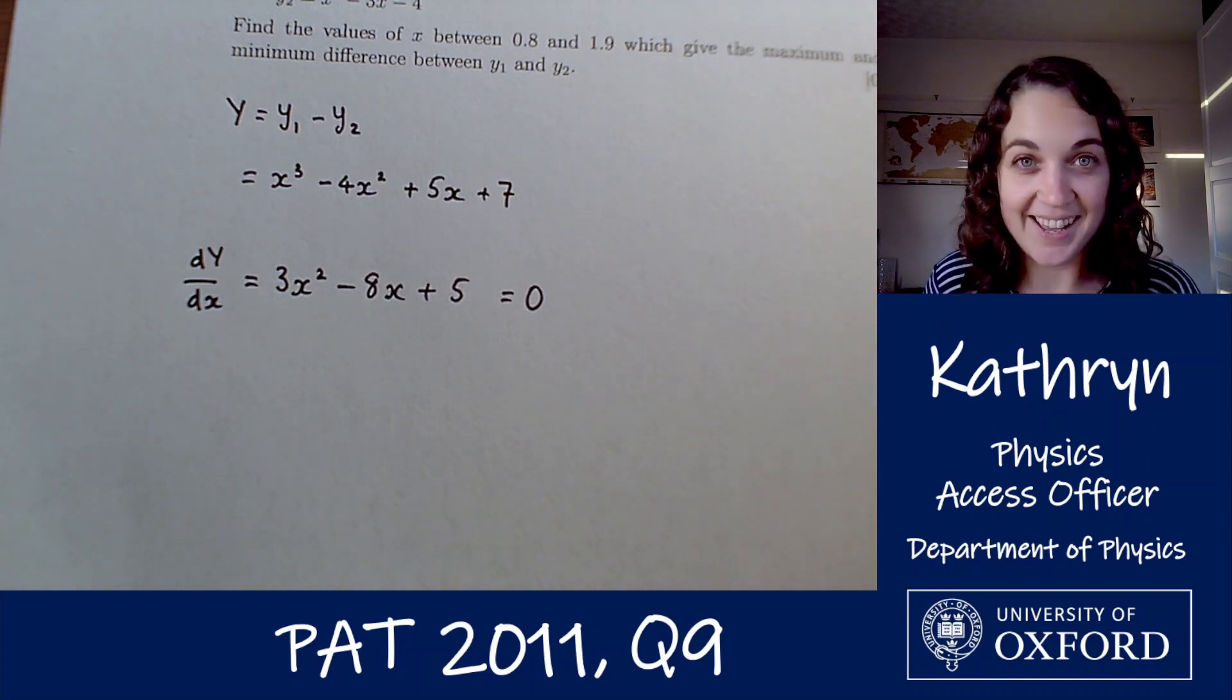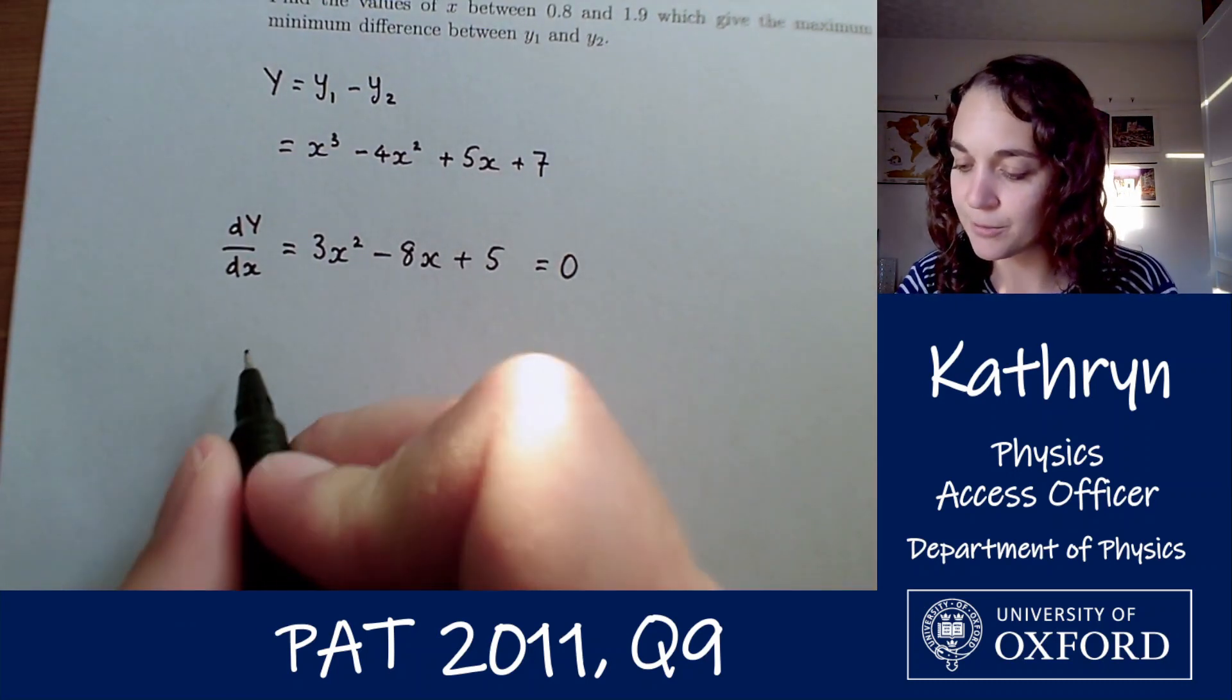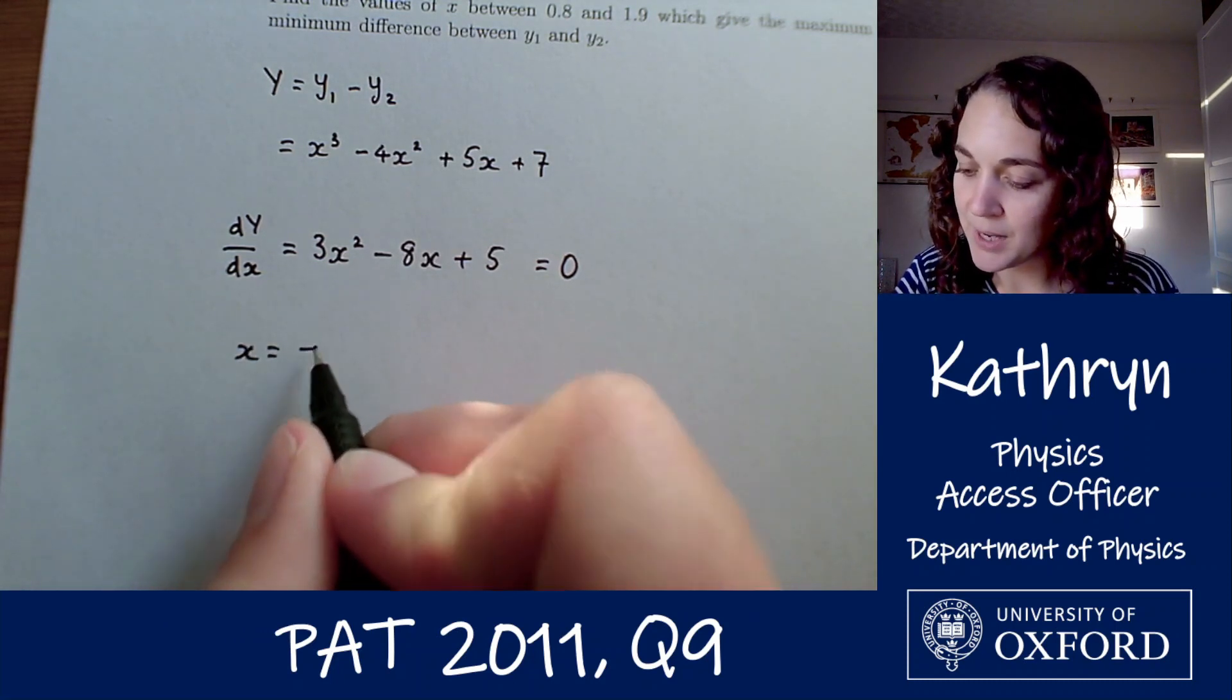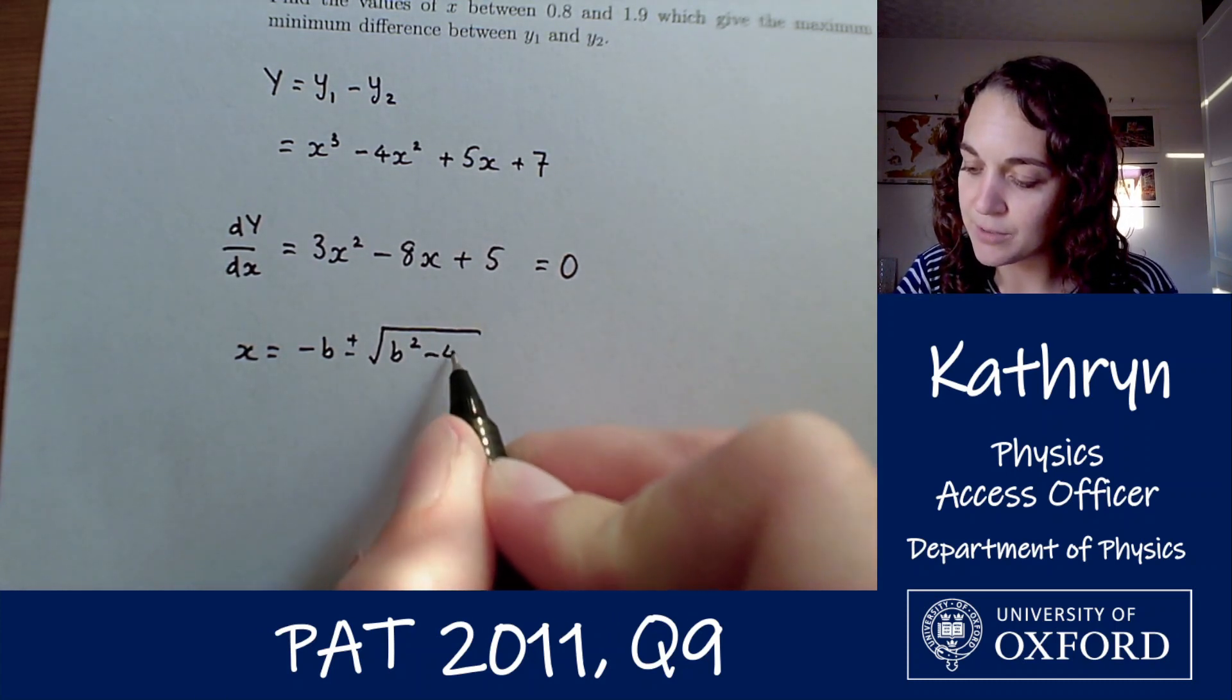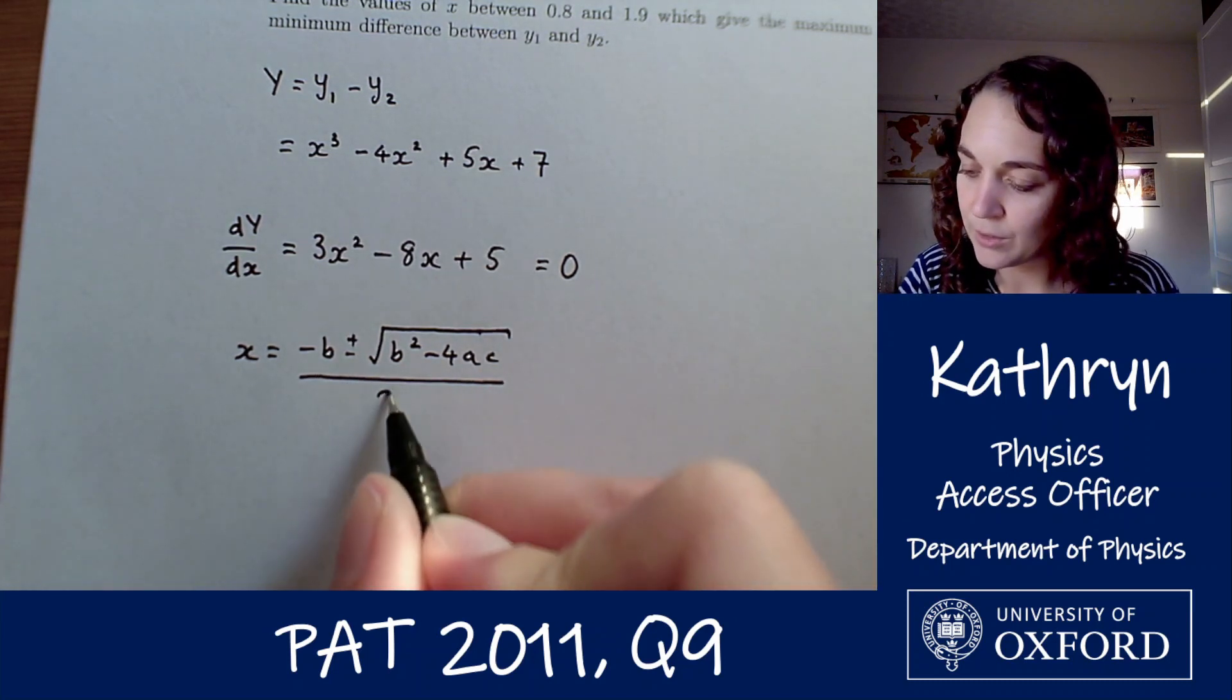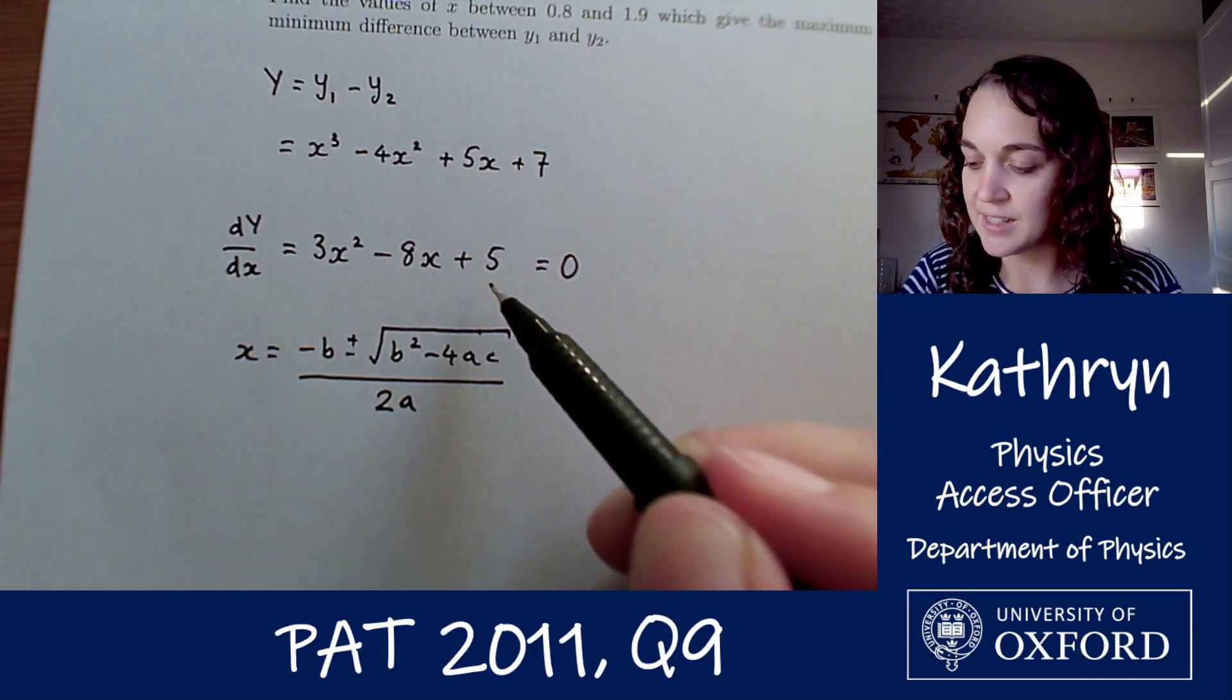I don't know how to factorize that off the top of my head, so quadratic formula seems like a sensible approach. Quadratic formula tells us that x equals minus b plus or minus the square root of b squared minus 4ac all divided by 2a, and in this case a is 3, b is minus 8 and c is 5.